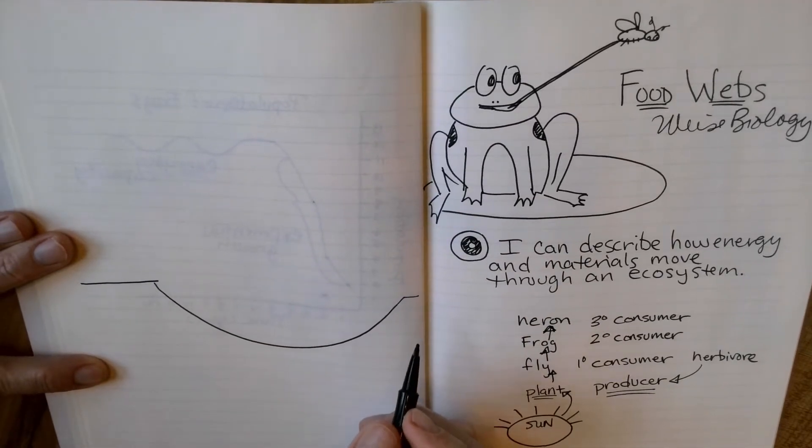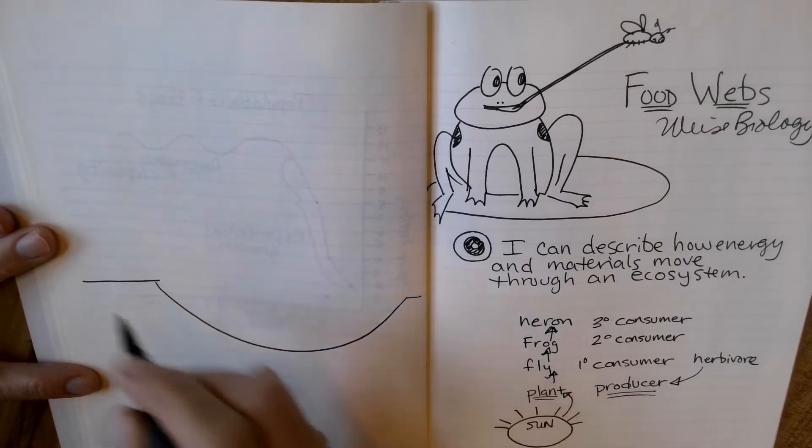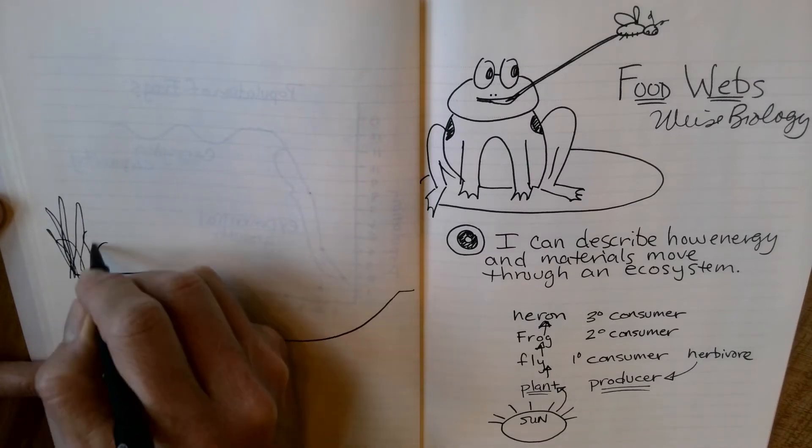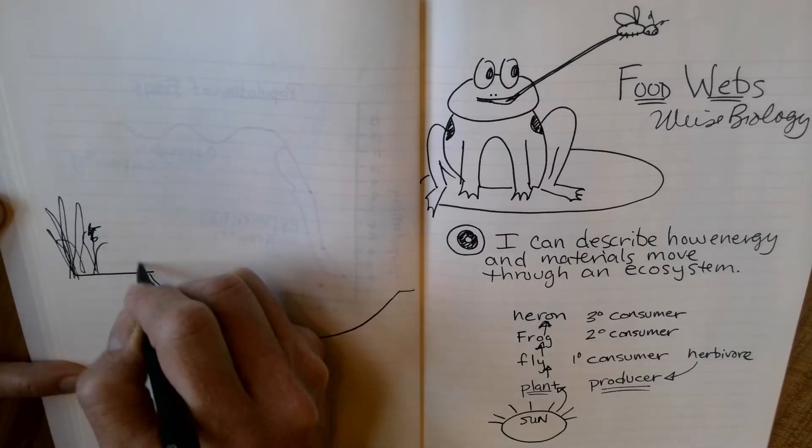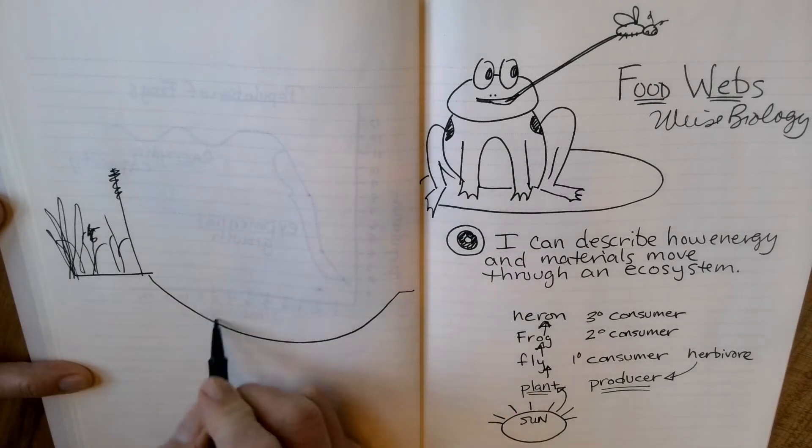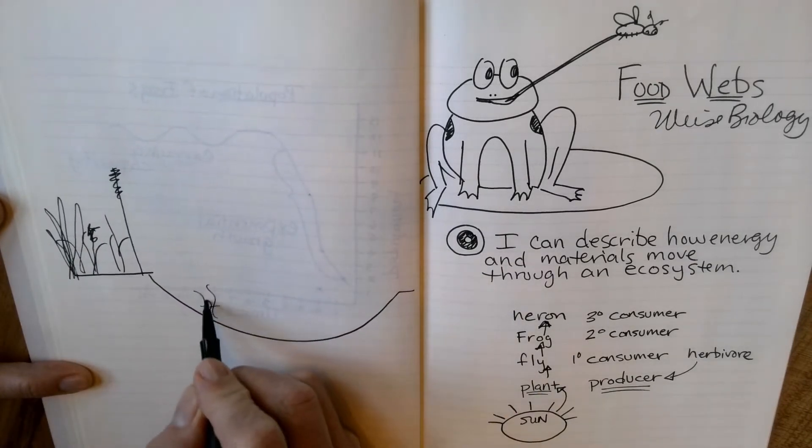Hopefully you can draw with me. That's the goal. And in our pond ecosystem, we have lots of different varieties of weeds and grasses over here. We have little cattails. Your picture should have quite a bit in the way of producers.